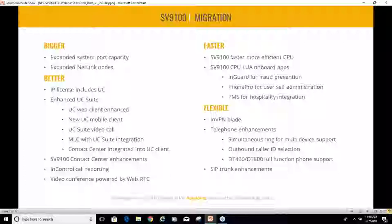Looking at the SV9100 — these are just a sampling of new items; there are detailed downloads available in the handout section. There are four categories. First, expanded port capacity: this system is larger than the 8100 could handle — it goes up to 896 stations and 400 trunks, a pretty sizable increase. The number of network nodes, meaning remote sites, now goes up to 50 on the 9100. So if you have multiple locations, clinics, or different school campuses, the 9100 will fit a much larger footprint than the 8100.